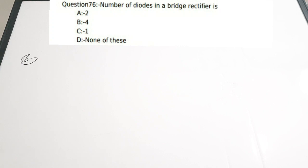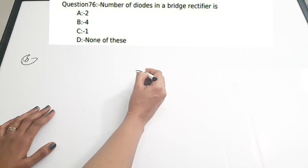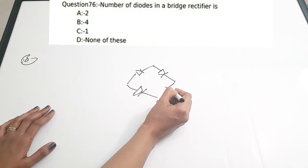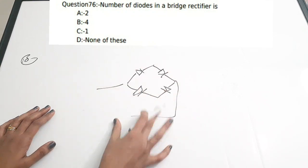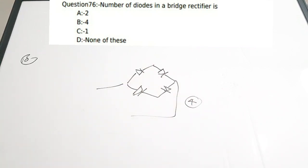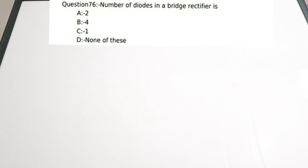Tenth question: The number of diodes in a bridge rectifier is — a) 2, b) 4, c) 1, d) none of these. A bridge rectifier has a bridge circuit with diodes connected in a bridge structure. As you can clearly see from the circuit, there are four diodes. Correct answer is option B, four diodes.